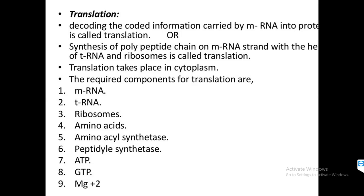In eukaryotes, transcription occurs in the nucleus, but translation occurs in the cytoplasm. In prokaryotes, both transcription and translation occur inside the cytoplasm. So for eukaryotes, translation occurs in the cytoplasm and transcription occurs in the nucleus.